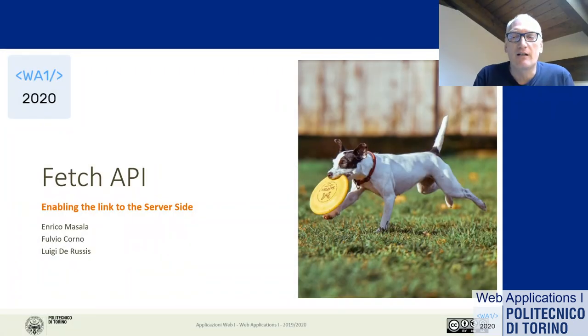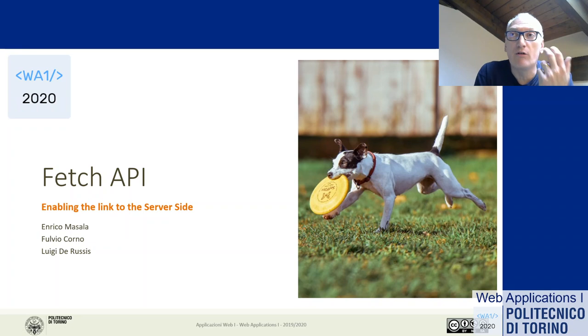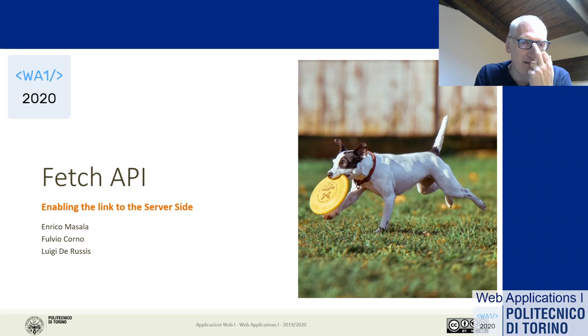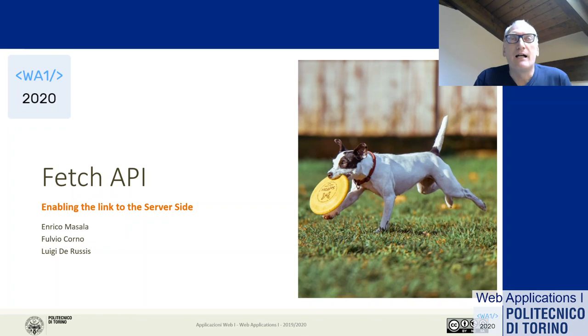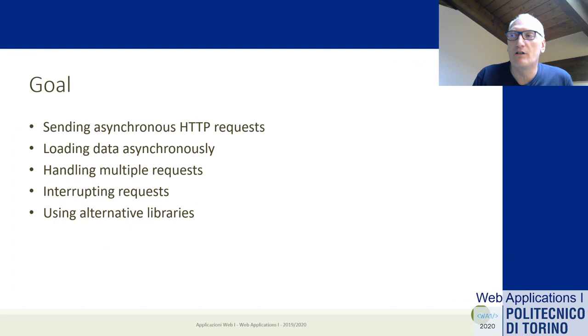Today we are going to close the topic on REST APIs. Last time we saw the server side — how to implement APIs in Express and Node.js — and today we'll see how to do that on the client side. Browsers have a new API called fetch, which allows us to call external APIs and execute HTTP requests in a simple, modern way using asynchronous functions and promises.